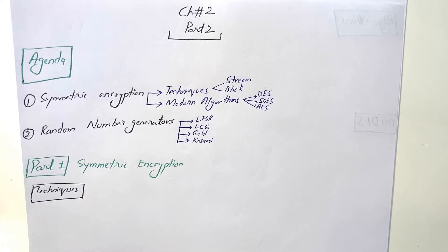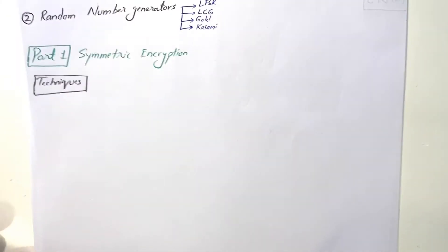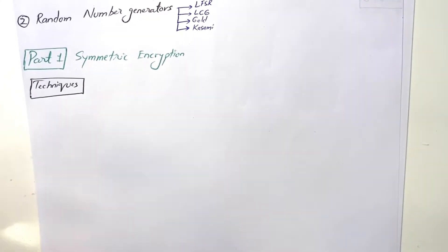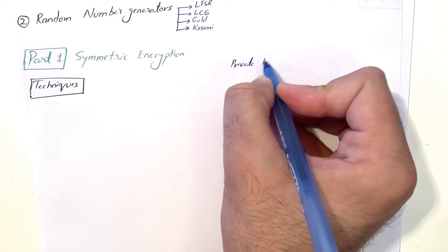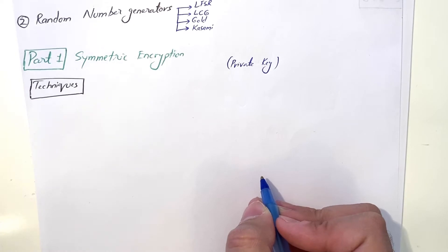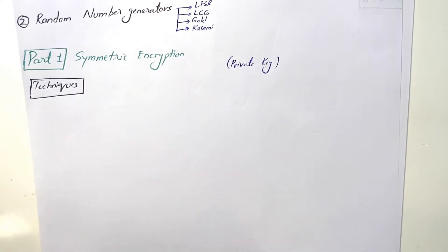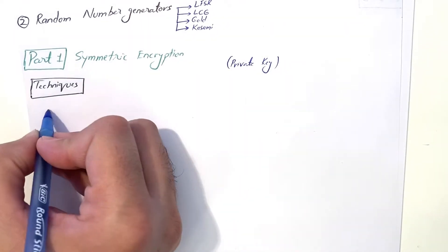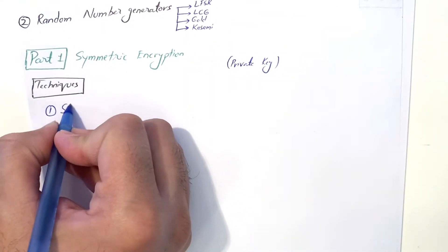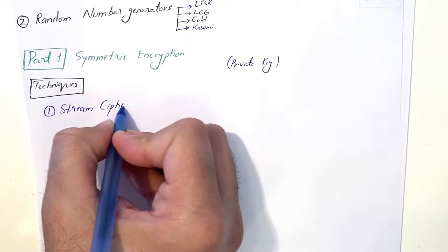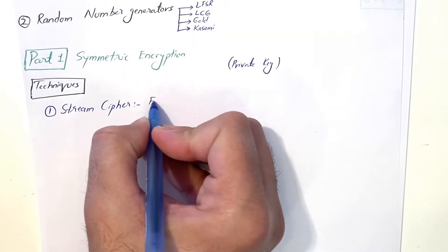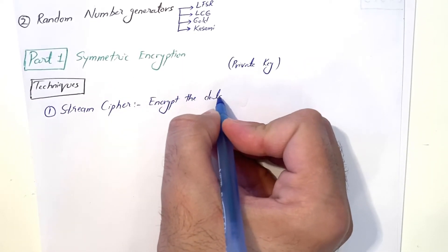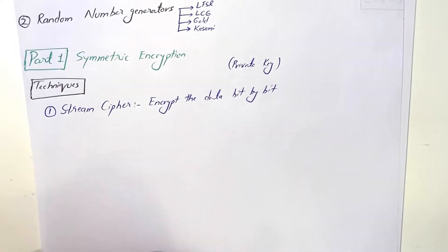Let's start with techniques of symmetric encryption. In symmetric encryption, both sender and receiver use the same key — a secret or private key — for encryption and decryption. There are two main techniques: the first is stream cipher, which encrypts data bit by bit. It's good for small or low-cost applications — we encrypt the data directly, bit by bit, without making chunks.